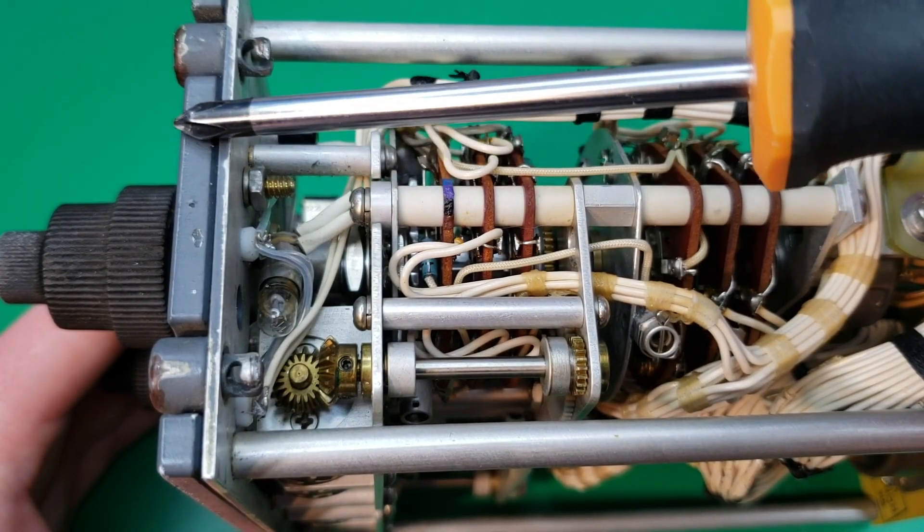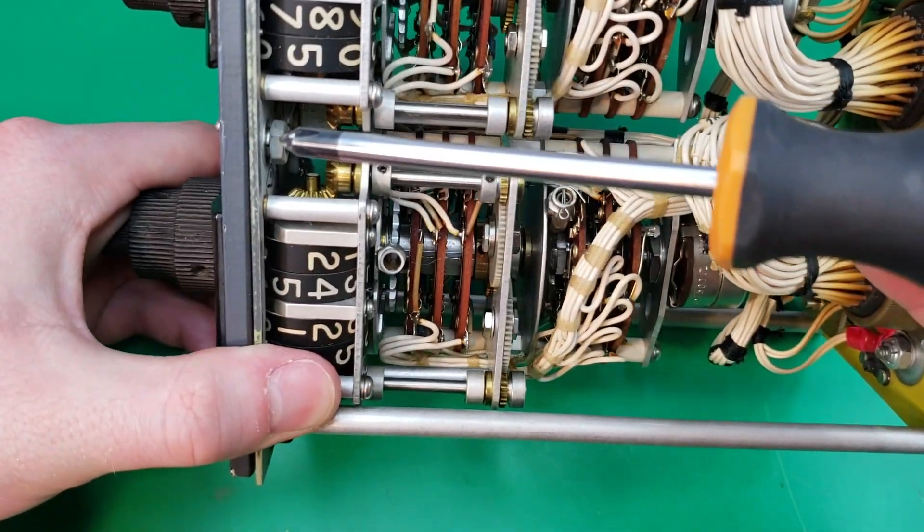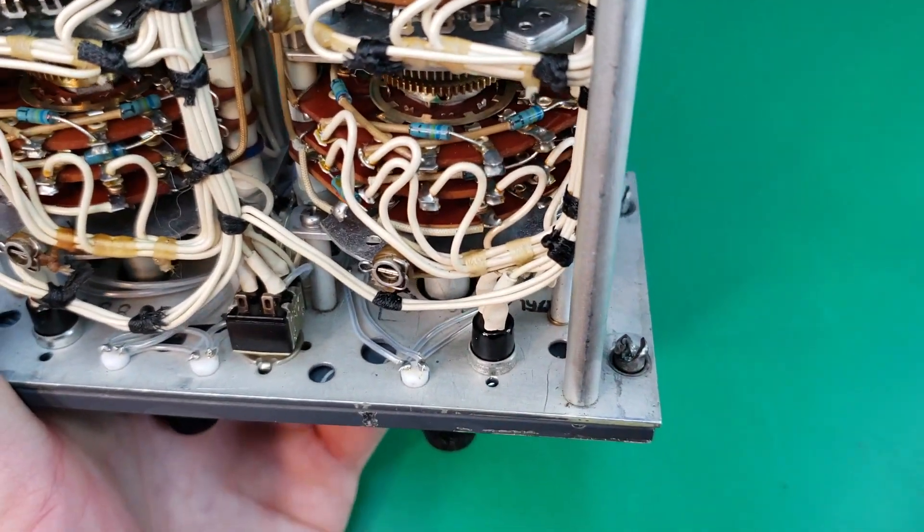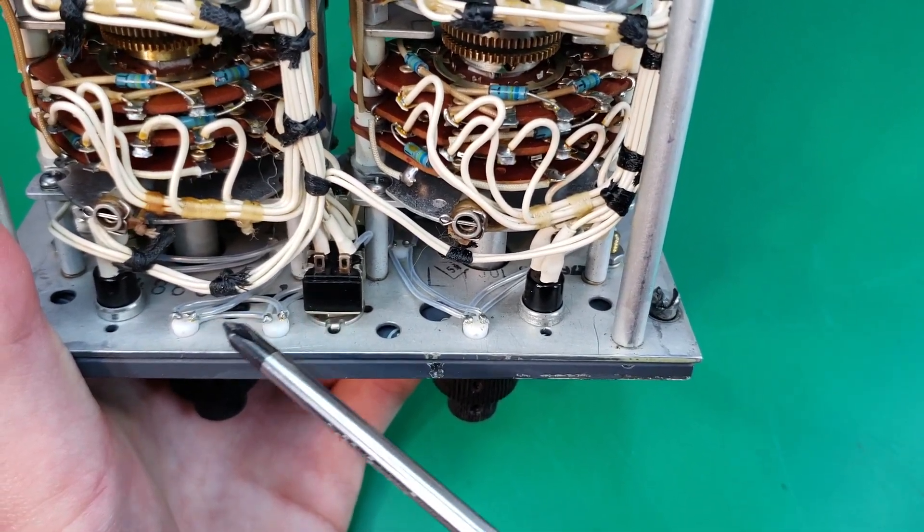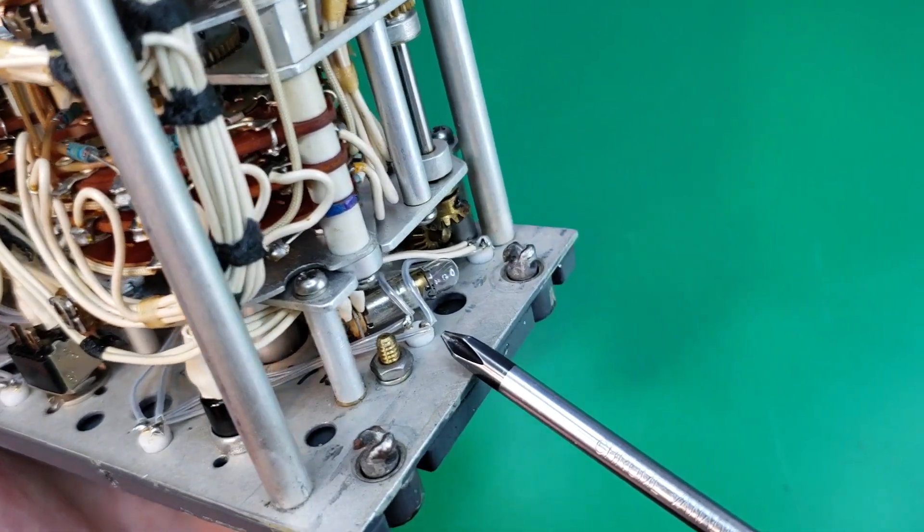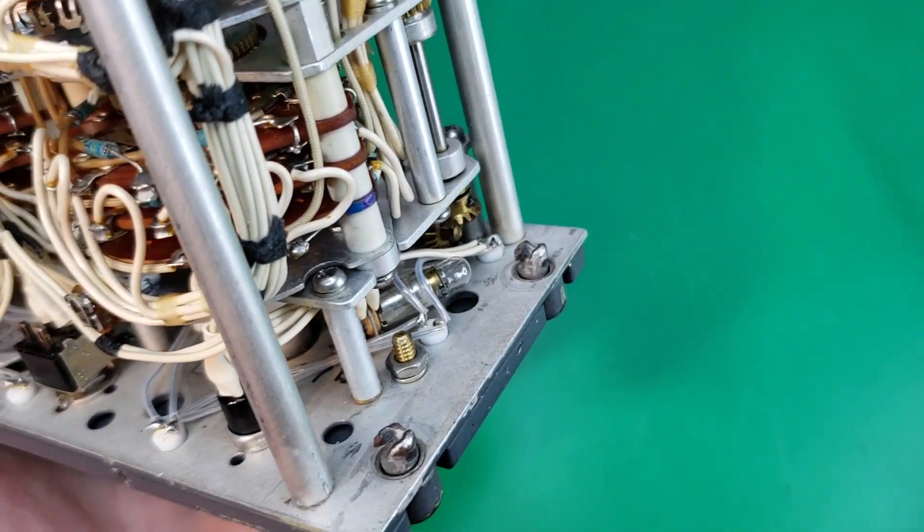These nuts here are holding on the front faceplate. We also have one over here, and one here. And you'll also notice that we have a whole bunch of backlights here wired in parallel. This is to illuminate the panel when it is dark out.